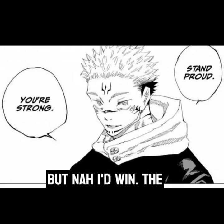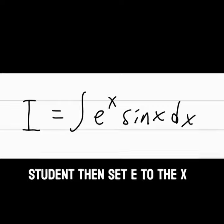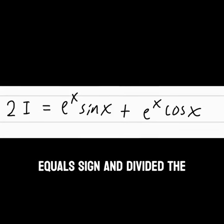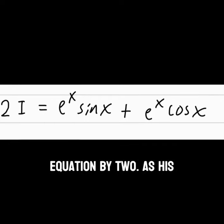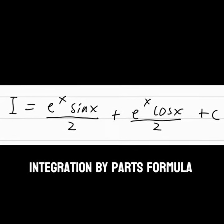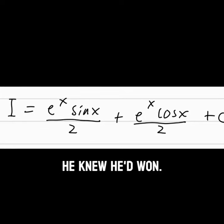The student then set e to the x sine x as I, then moved both I's to the left side of the equals sign and divided the equation by 2. As his solution satisfied the integration by parts formula, he knew he'd won.